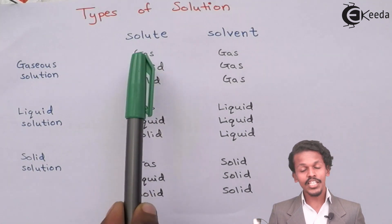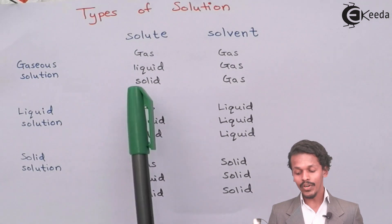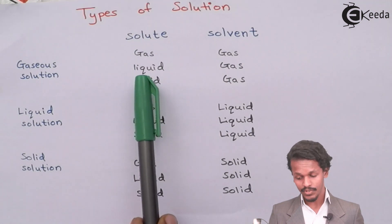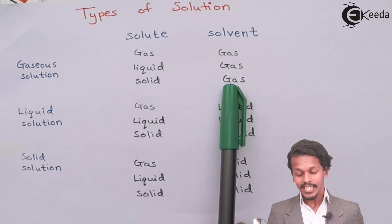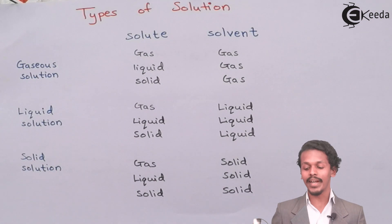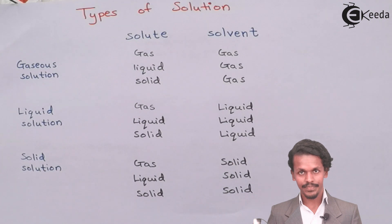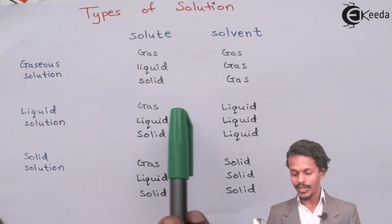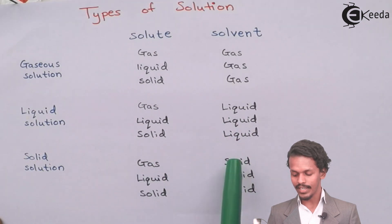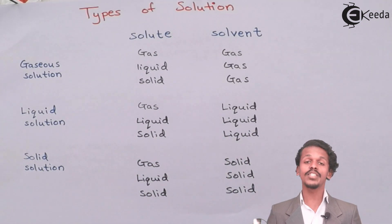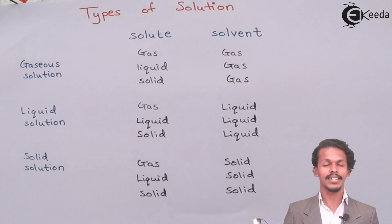A gas solute can be dissolved in a gas, liquid, or solid solvent. Similarly, a liquid solute can dissolve in gas, liquid, or solid. And a solid solute can also dissolve in gas, liquid, or solid. This gives us a total of nine types of solution: gas in gas, liquid in gas, solid in gas, gas in liquid, liquid in liquid, solid in liquid, gas in solid, liquid in solid, and solid in solid.